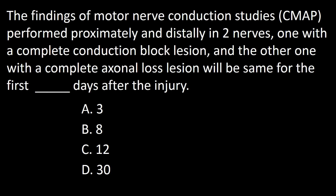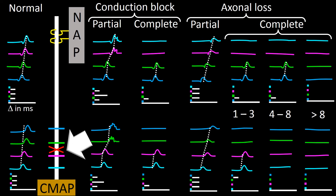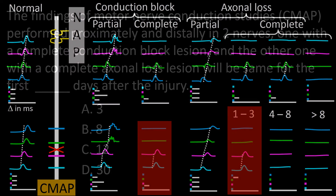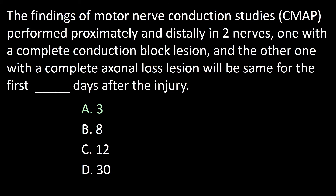Next question: the findings of motor nerve conduction studies (CMAP) performed proximally and distally in two nerves — one with complete conduction block and one with complete axonal loss — will be the same for the first dash days after injury. A: 3, B: 8, C: 12, D: 30. The compound muscle action potential produced by complete conduction block will be the same as that produced by complete axonal loss during the first three days. So the answer to this question is A.